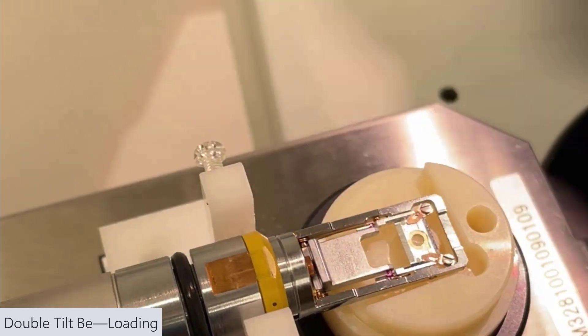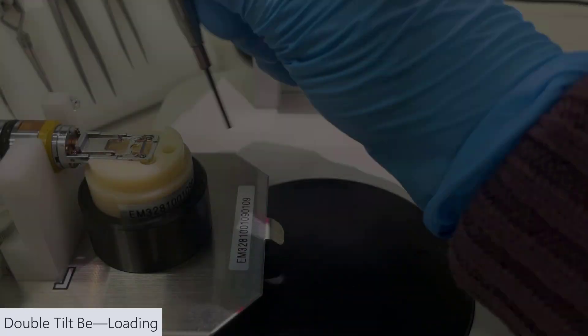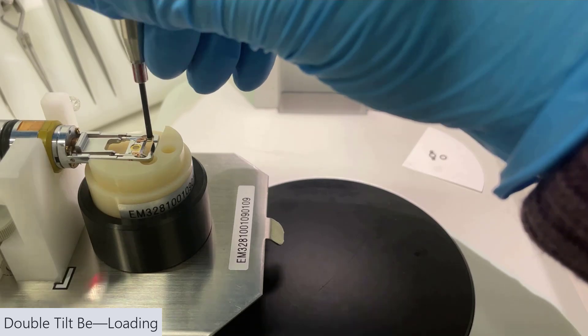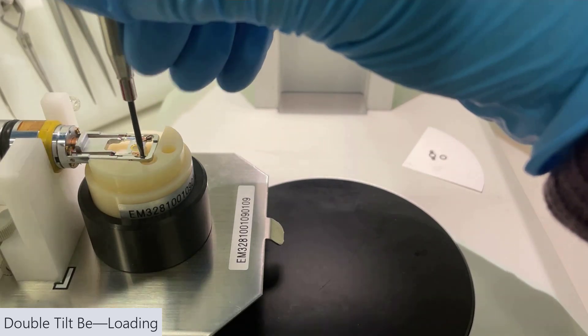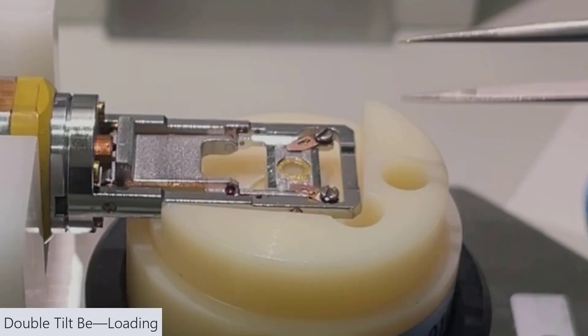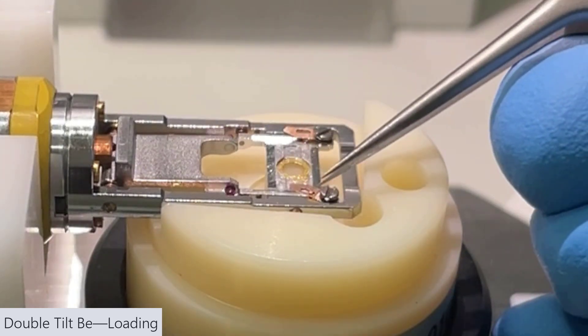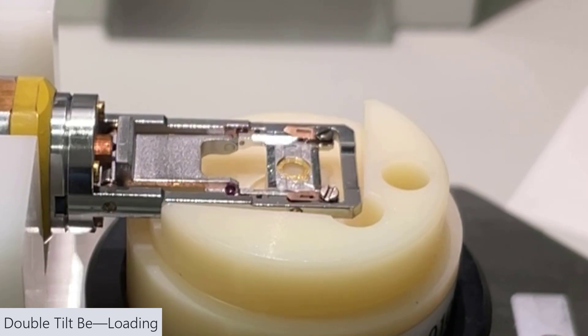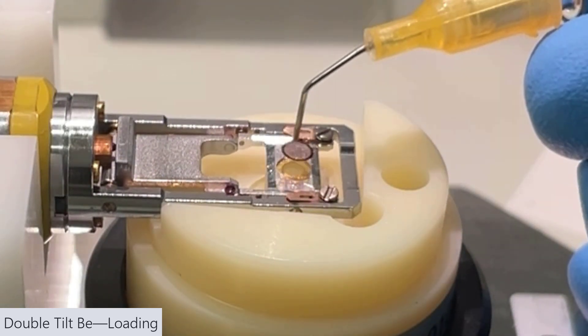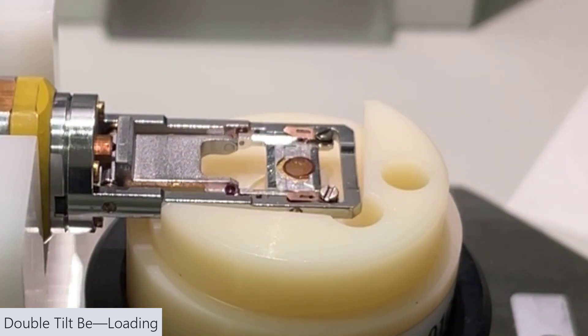This is another double tilt holder, so I'm just locking it in place. Now we have two screws, so you want to loosen both of those a couple of turns and then move them out of the way. Bring your sample in and drop it in place.